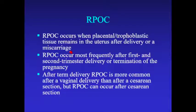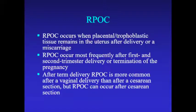Retained products occur when there's placental or trophoblastic tissue in the uterus after delivery or miscarriage. It's actually most frequent after first or second trimester delivery or termination. This is because in the second trimester the placenta is still very invasive and hasn't let go yet. After a term delivery, retained products are more common after vaginal delivery than cesarean, but you can definitely get retained products after a C-section.